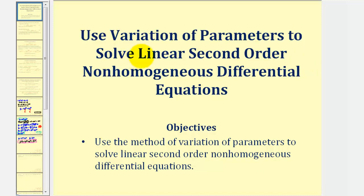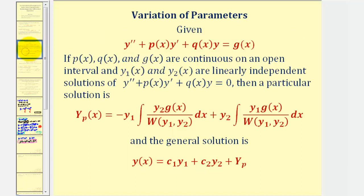Welcome to an example on how to use the variation of parameters method to solve a linear second order non-homogeneous differential equation, which means we'll be solving a differential equation in this form. Notice how the coefficient of y double prime must be one, and g of x would be non-zero. So if p, q, and g are continuous on an open interval and y sub one and y sub two are linearly independent solutions of the corresponding homogeneous differential equation, then a particular solution to the non-homogeneous differential equation is given by this formula for big y sub p, which we derived in a previous lesson.